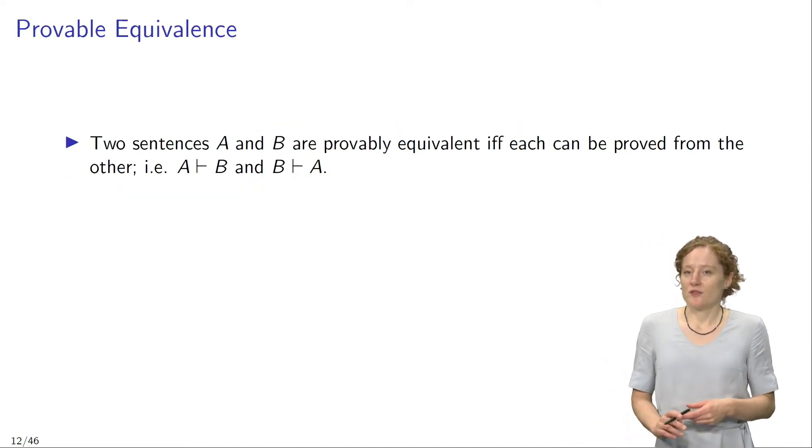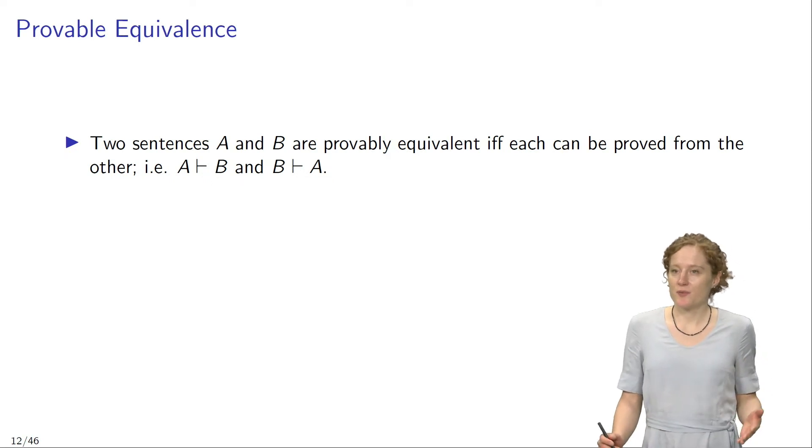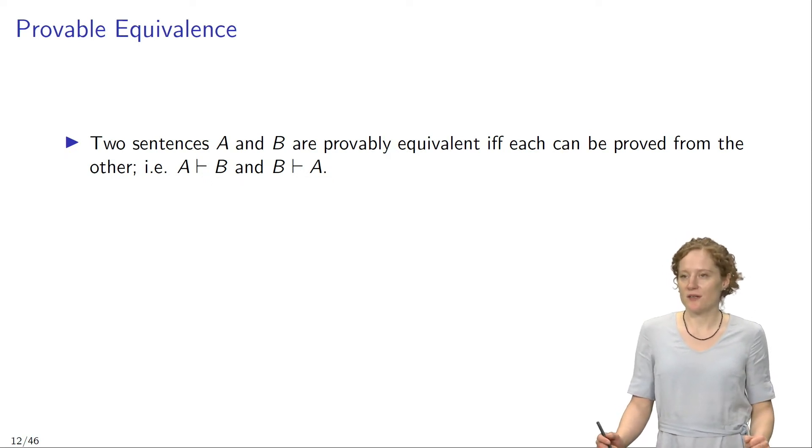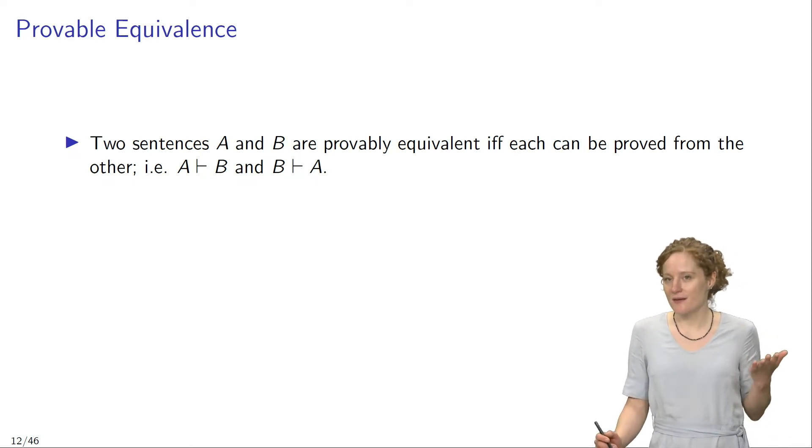Two sentences A and B are provably equivalent if and only if each of them can be proved from the other. We can express provable equivalence by means of the turnstile, that is by saying A turnstile B and B turnstile A.